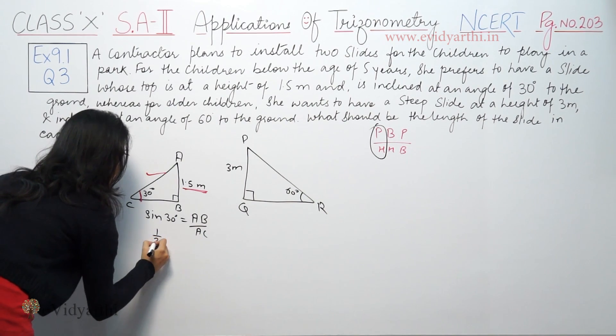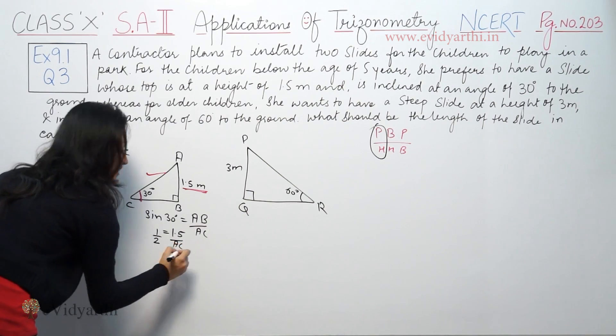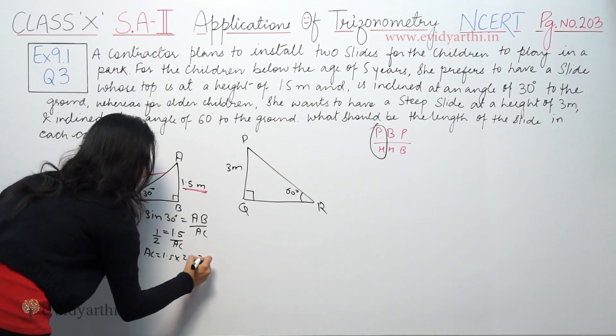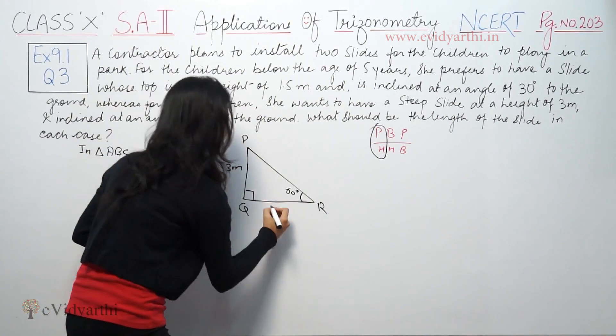So AC is equal to 1.5 into 2, means 3 meters. Same in triangle PQR.